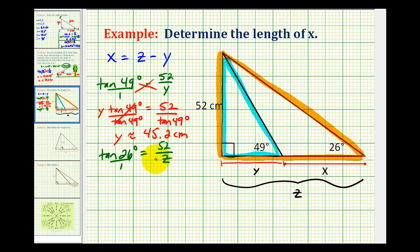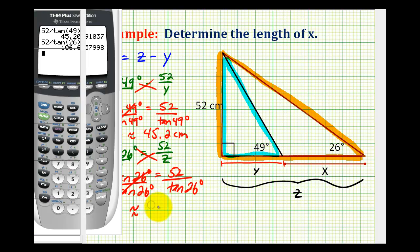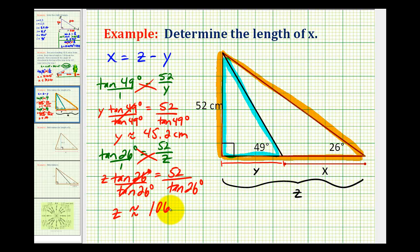So now we'll cross multiply. z times tangent twenty-six degrees equals fifty-two. We'll divide by tangent twenty-six degrees. So we have z is approximately equal to this quotient. So now we have fifty-two divided by tangent twenty-six degrees. And we have approximately one hundred six point six centimeters.